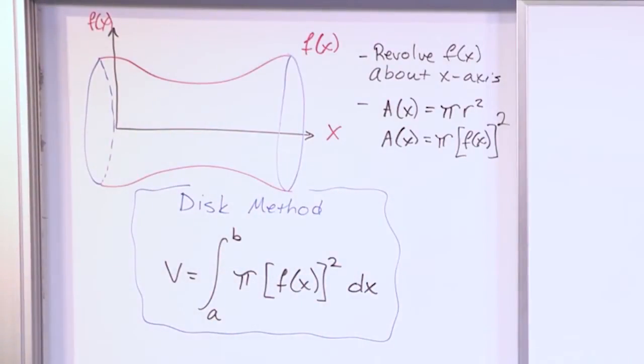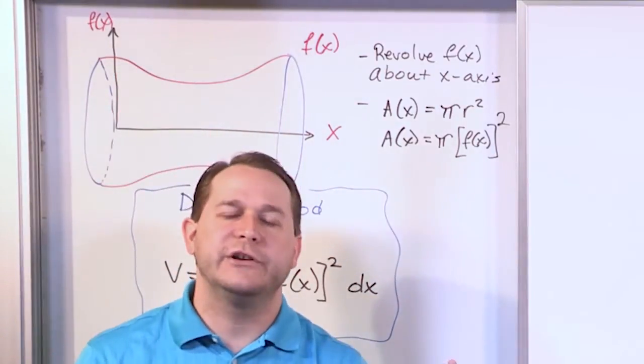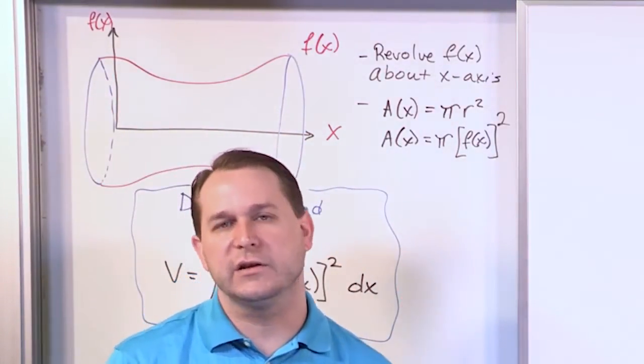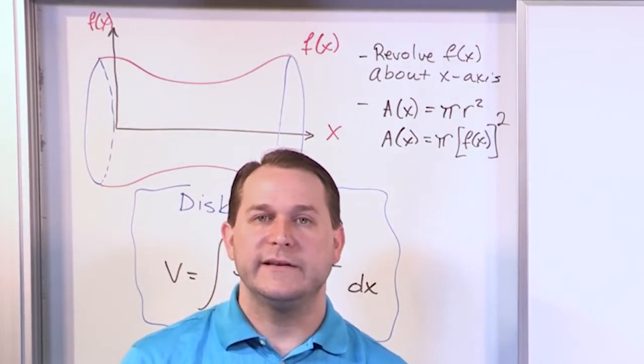That's what we're studying here, the disk method. The reason we call it the disk method is that no matter where you cut your object, you're always going to see a cross section that's going to look like a circle or a disk. That's the reason why we call it the disk method.